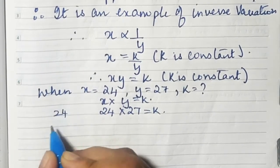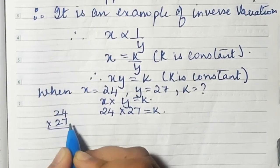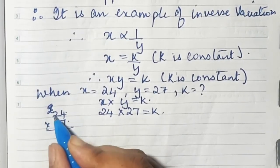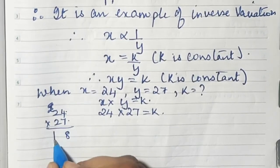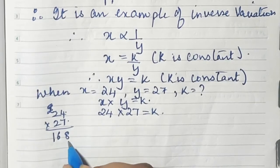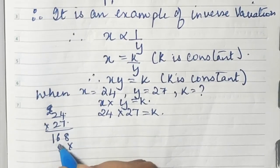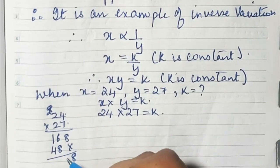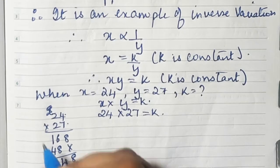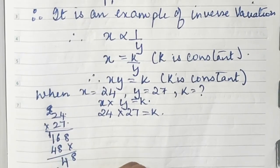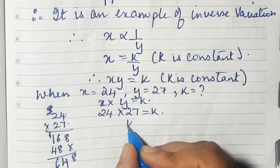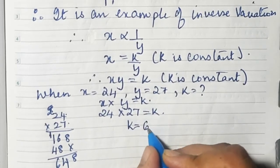Calculating 24 into 27: 7 fours are 28, 7 twos are 14 plus 2 is 16, 4 twos are 8, 2 twos are 4. We get 648. So k, the constant, is 648.